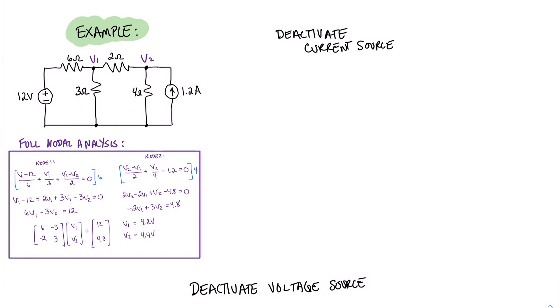Now let's take a look at an example and put the idea of superposition into practice. Over here, you can see I have a simple circuit. I have a 12 volt source here on the left. I have several resistors in between. And then I have a current source of 1.2 amps on the right. I've gone ahead and labeled a couple of the nodes in this circuit. The node here in the middle as V1 and the node here on the right as V2. And I've gone ahead and done the full nodal analysis of this circuit to determine the voltages V1 and V2. Here you can see V1 should be 4.2 volts and V2 should be 4.4 volts.